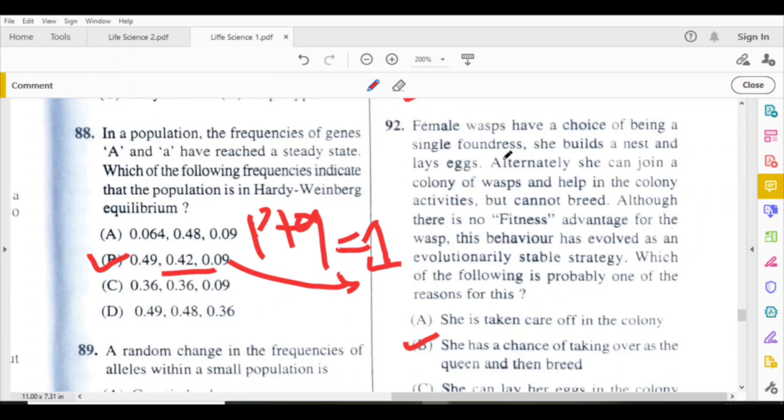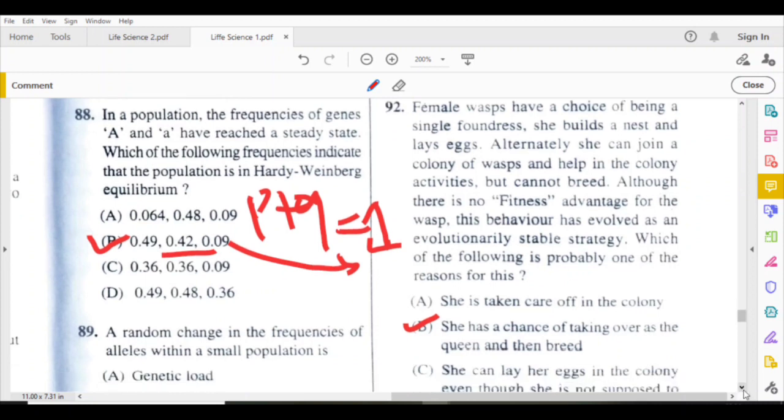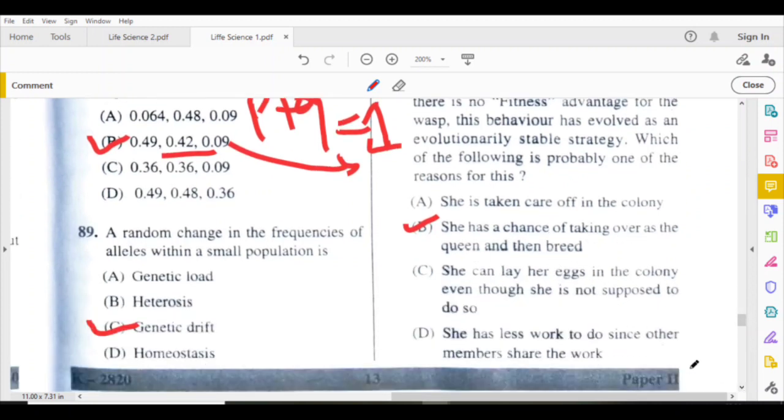Females undergo fertilization, so the colonial females are related. They are sisters. B is the answer: She has a chance of taking over as the queen and then breed.